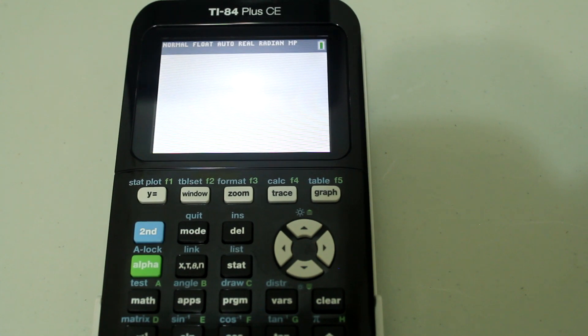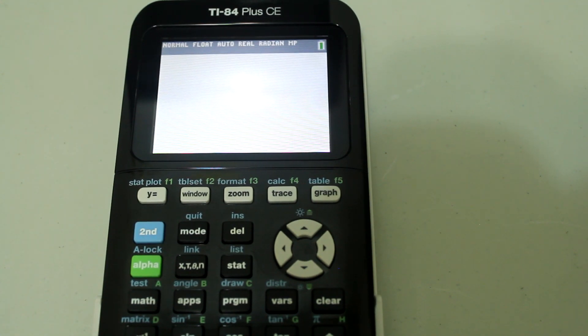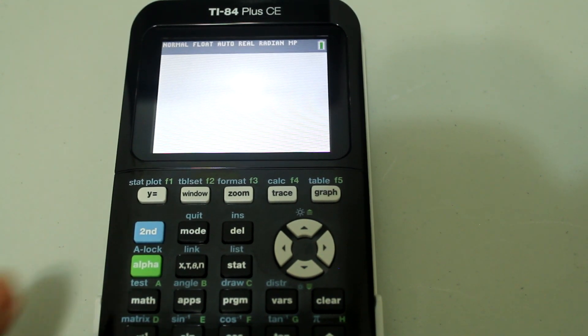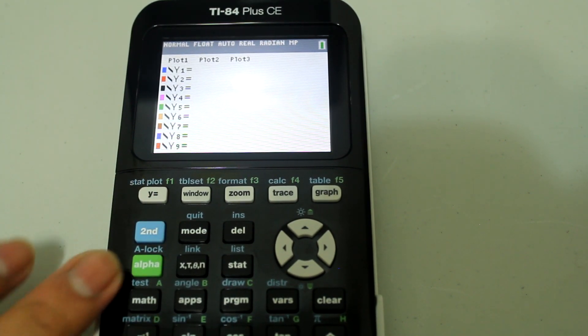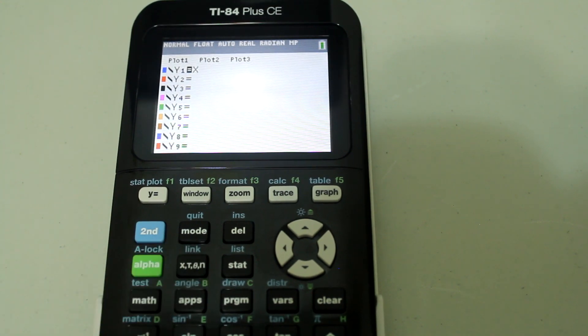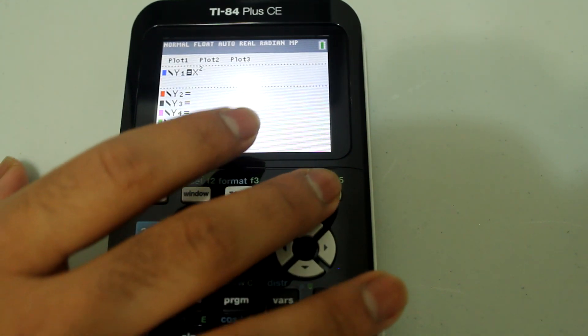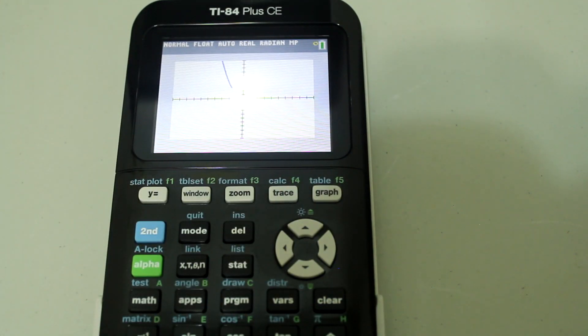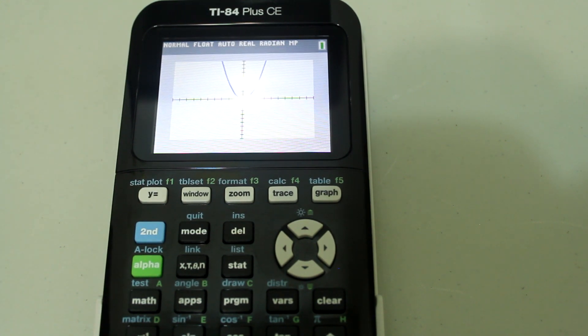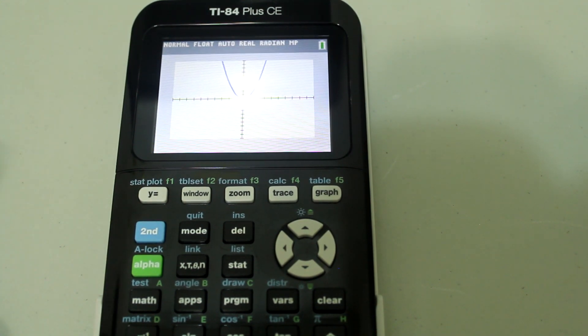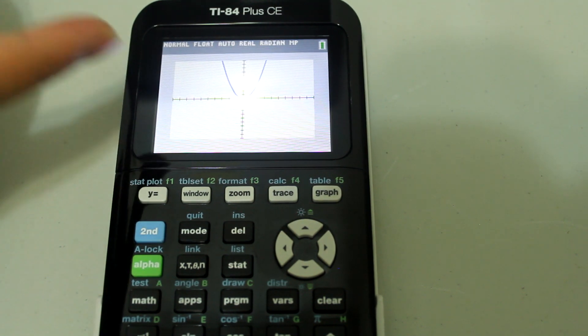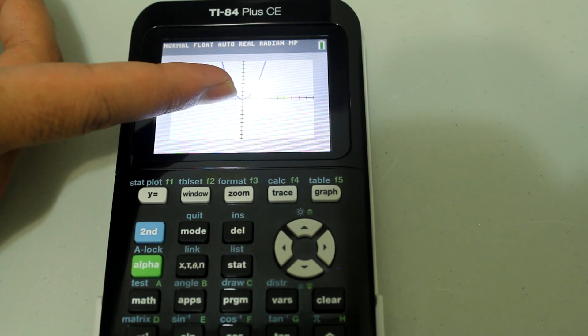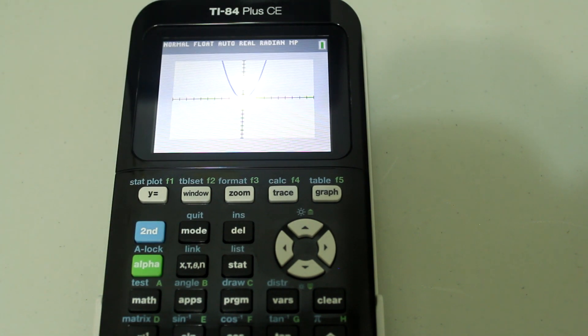First, let's graph just something really basic like x squared. So let's go into y equals and let's type in x squared and then graph it. So we have the graph of x squared now. Let's say we want to find the minimum from this graph. Well we can already see that the minimum's at 0, 0, but let's do it graphically.